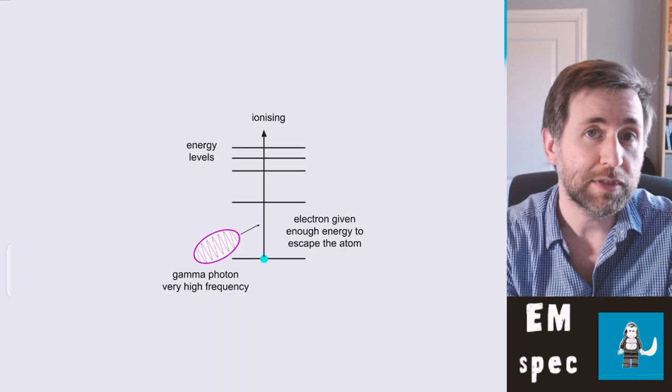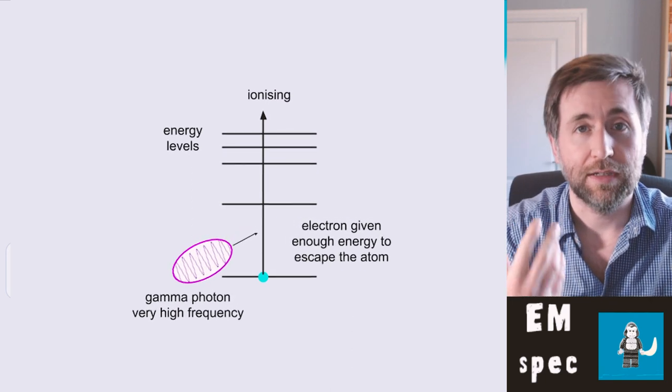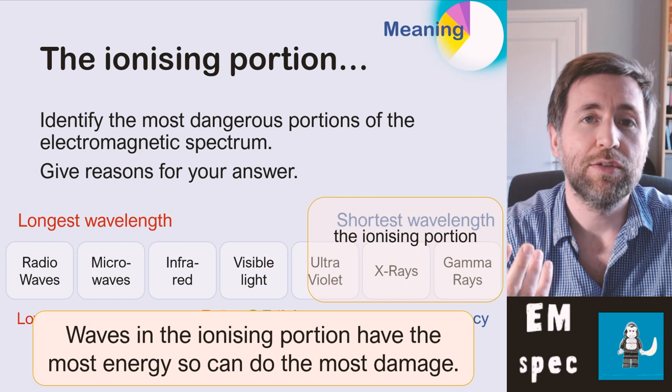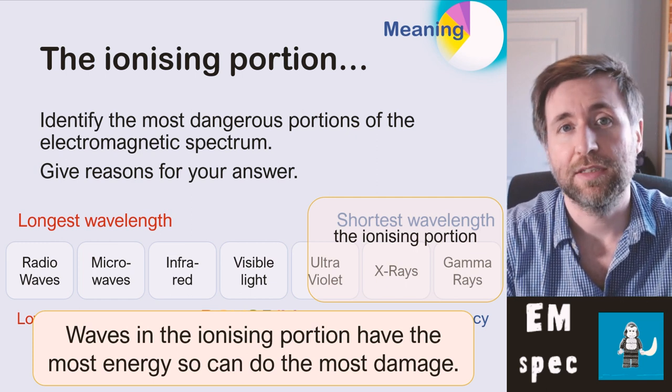They have the most energy, so they can do the most damage. They can ionize atoms and potentially kill cells, and they can also cause DNA mutations which can lead to cancer. The difference between an X-ray and a gamma ray is not so much about the frequency or the wavelength — it's actually about where it comes from. X-rays are from changes in electron energy, and gamma rays are from the nucleus of atoms. They are nuclear radiation.